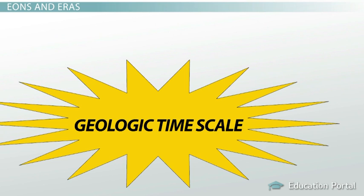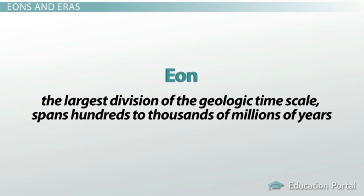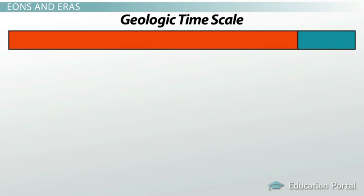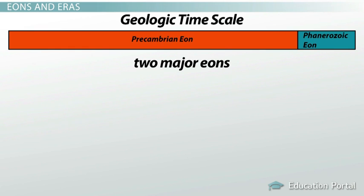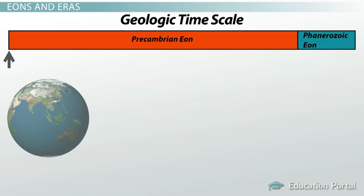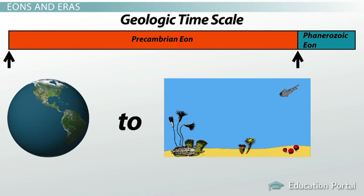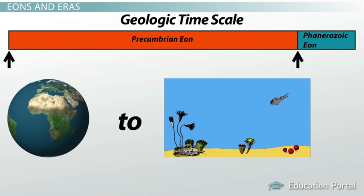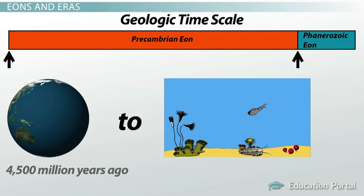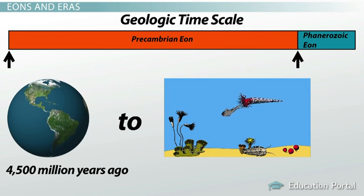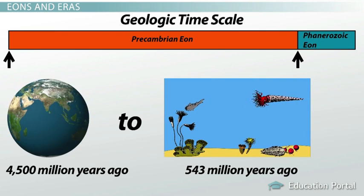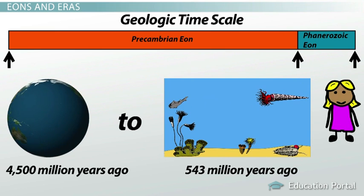The first principal subdivision is called the Eon — the largest division of the geologic timescale, spanning hundreds to thousands of millions of years. Geologists generally agree that there are two major Eons: the Precambrian Eon and the Phanerozoic Eon. The Precambrian goes from the formation of the Earth to the time when multicellular organisms first appeared — from 4,500 million years ago to just about 543 million years ago. Then begins the Phanerozoic Eon, which continues up to today.